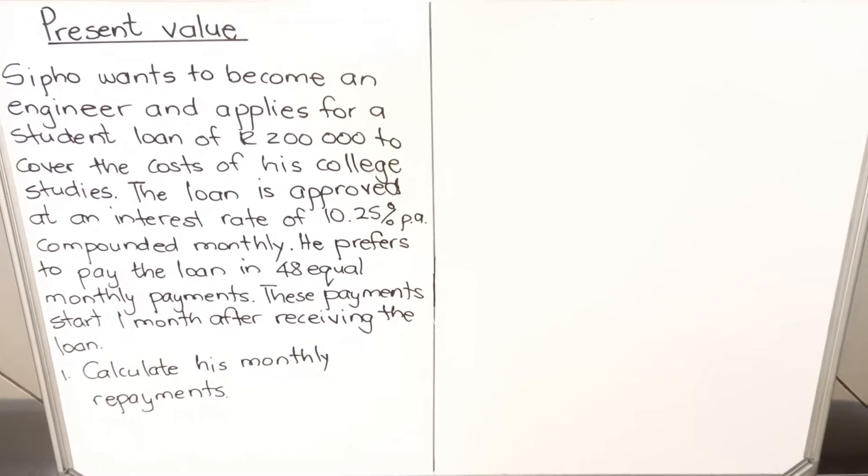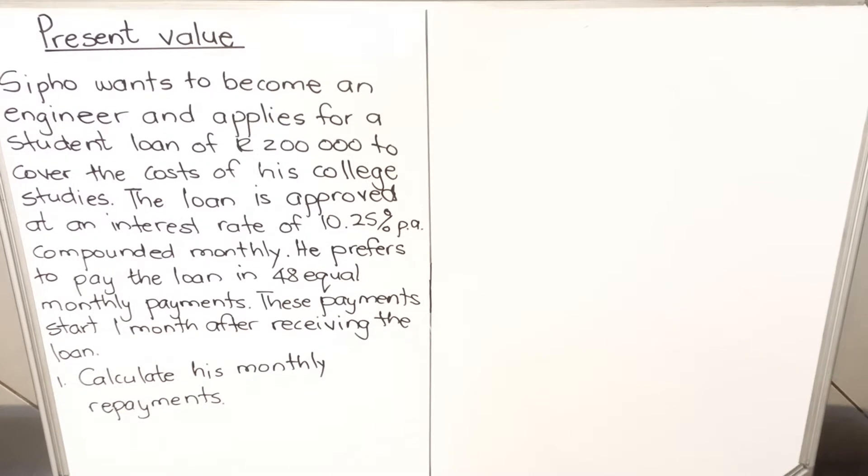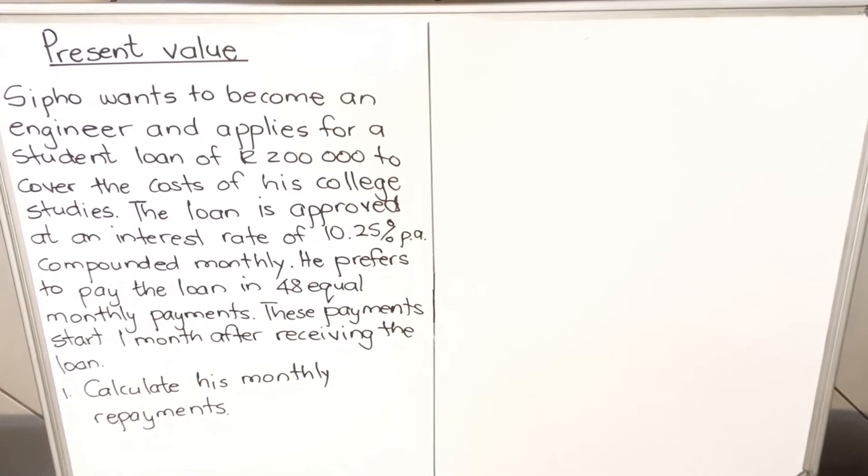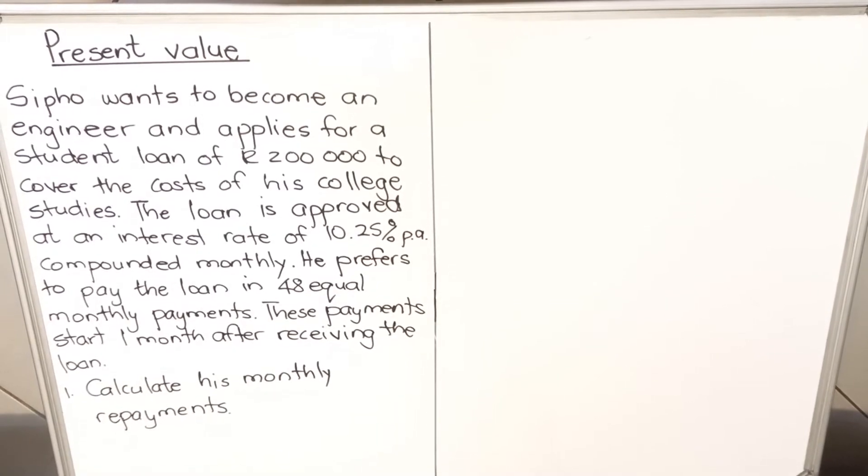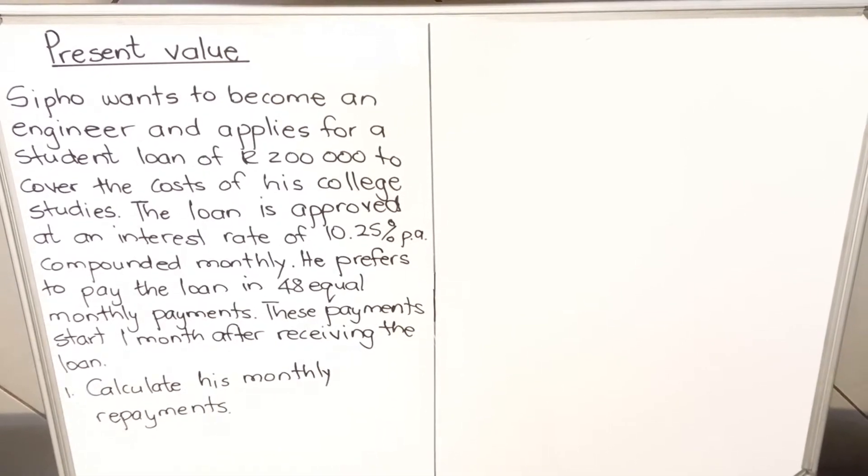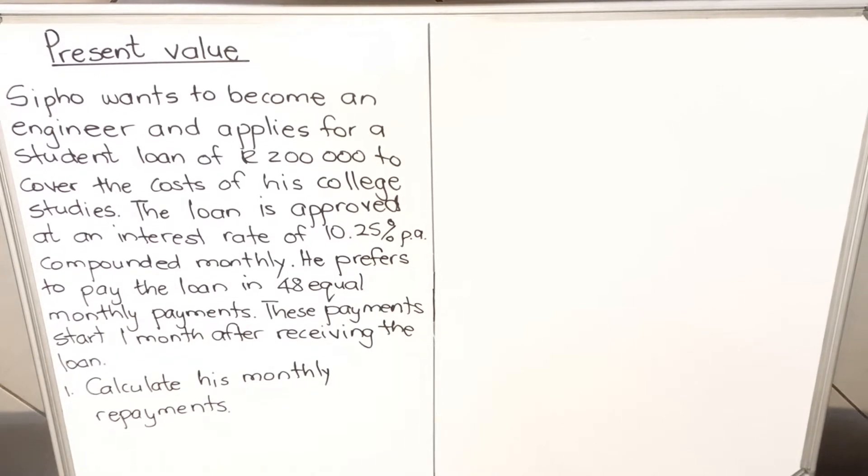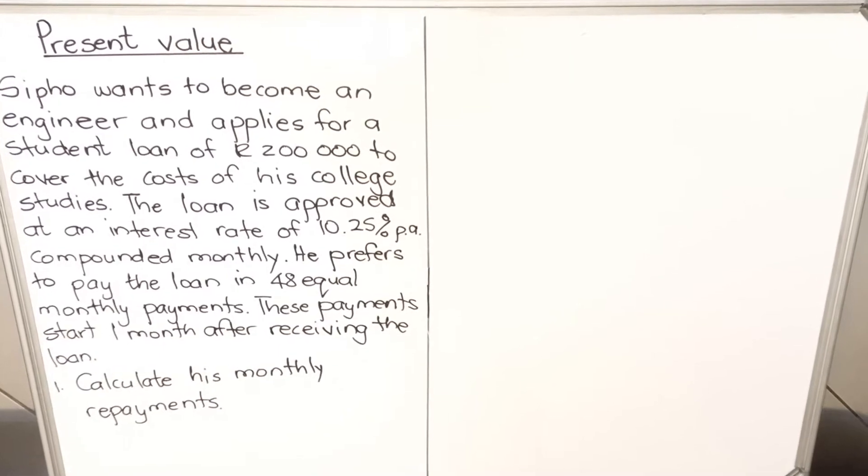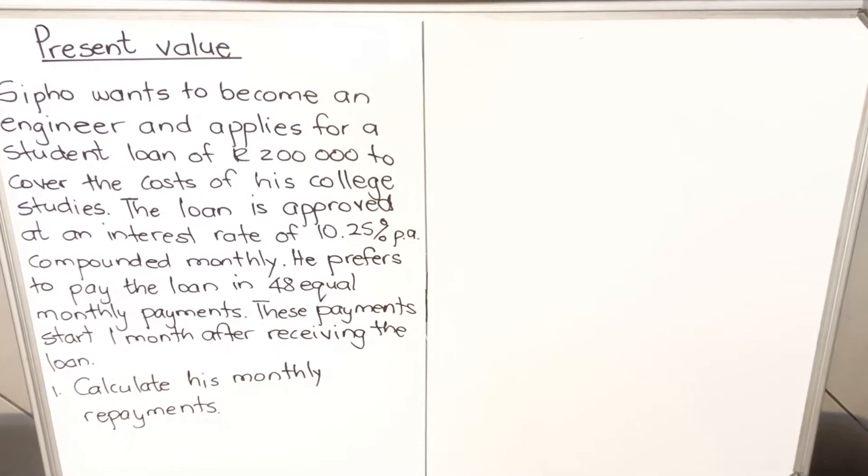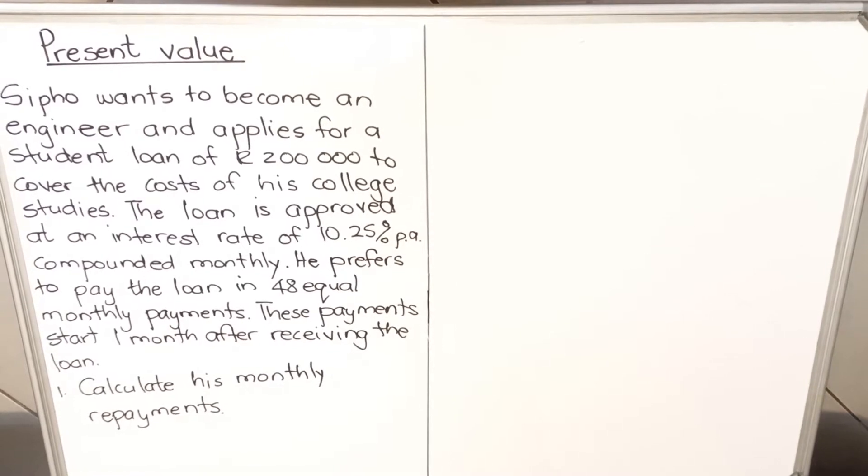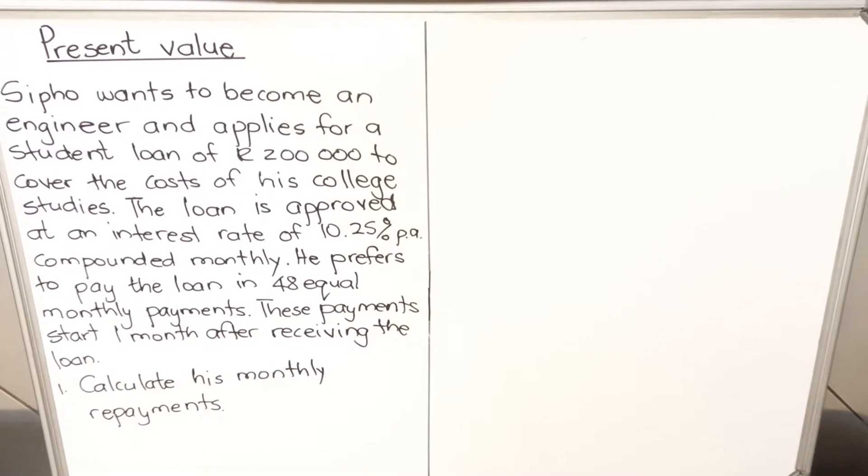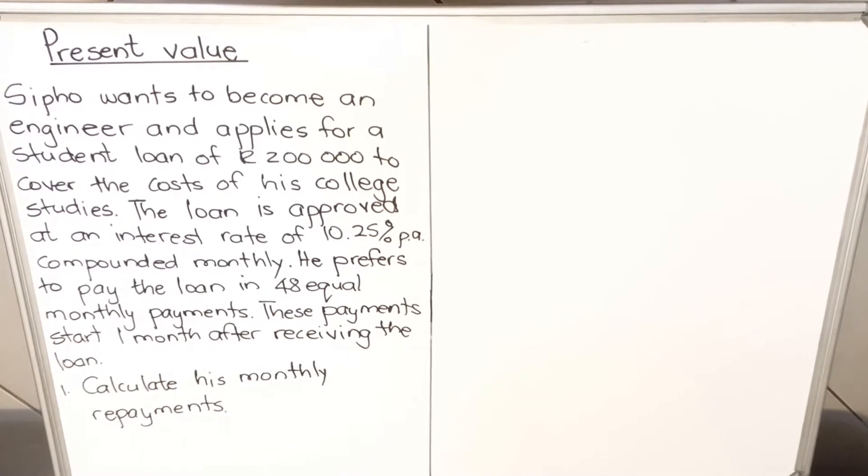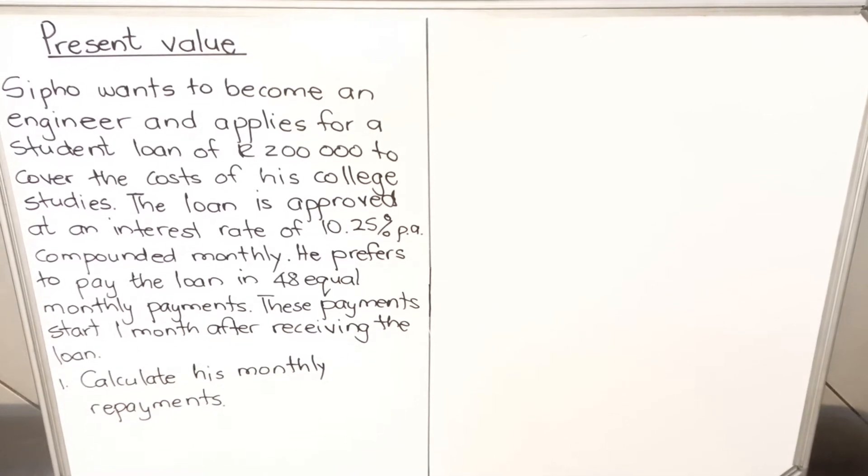Hello everyone, this is a lesson on present value, financial maths grade 12. In our previous lesson we did future value. The difference between present value and future value is: future value, you invest and put money away and get it in the future. Present value, you take a loan, you get money now and then pay later on. Your formula sheet has both formulas and they're not confusing. The future value has an F, the present value has a P. Future F for future, present P for present. In this lesson we're going to do present value, so we're going to look at one example.